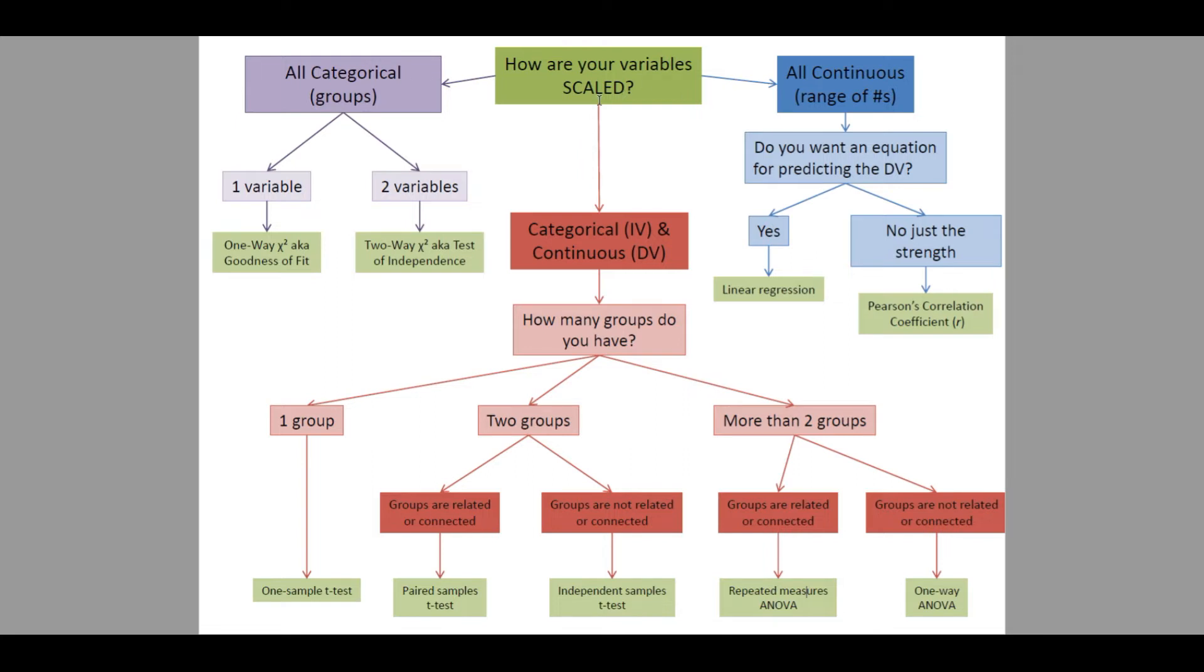We then moved on to considering cases where we wanted to look for differences in a variable, a scaled continuous variable between groups. So, in that case, we have a continuous dependent variable and a categorical independent variable representing the groups that we're talking about. So, we would want to know, is there a difference in this variable, our dependent variable, between the levels of our independent variable?